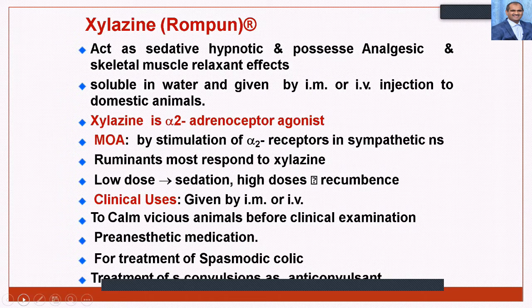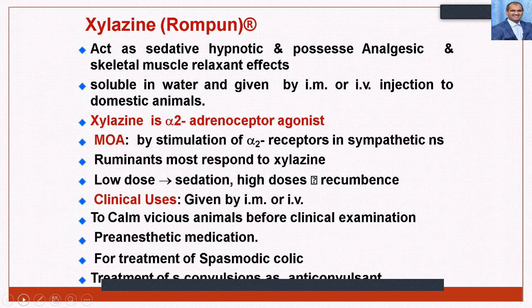Xylazine must be used carefully regarding dose, as high doses can cause life-threatening recumbency. Clinical uses include calming ferocious animals before clinical examination, pre-anesthetic medication, treatment of spasmodic colic in horses, and treatment of convulsions. Bromides (potassium or sodium salts) were formerly used for psychiatric treatment and are still used in some situations for CNS depression. Bromides depress only the motor area of the cerebral cortex and are the first-choice anti-epileptic drugs in dogs with epilepsy, with an elimination half-life of 24 days. Bromides do not undergo hepatic metabolism, making them useful in dogs with liver disease.